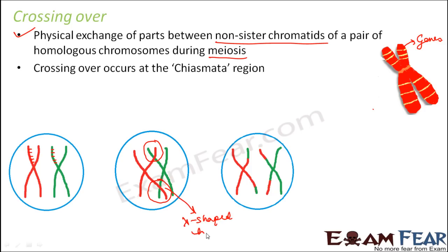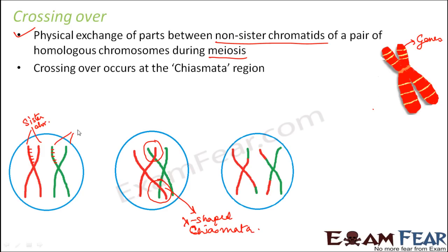We have discussed these things in detail when we spoke about meiosis. These are the regions where exact physical exchange will take place. Please remember that crossing over takes place only between the non-sister chromatids. These two are the sister chromatids of each other. Similarly, the green ones are sister chromatids of each other. But this type of exchange takes place between the non-sister chromatids.